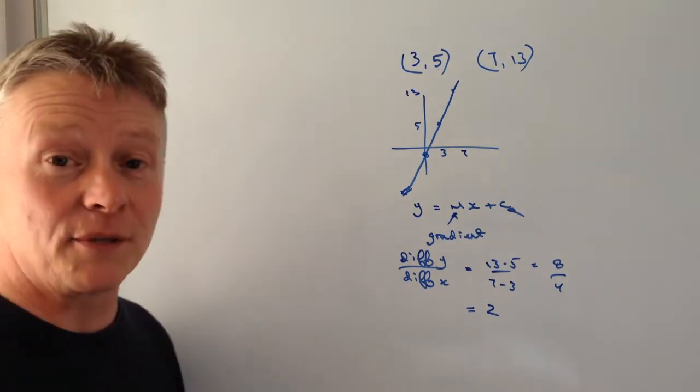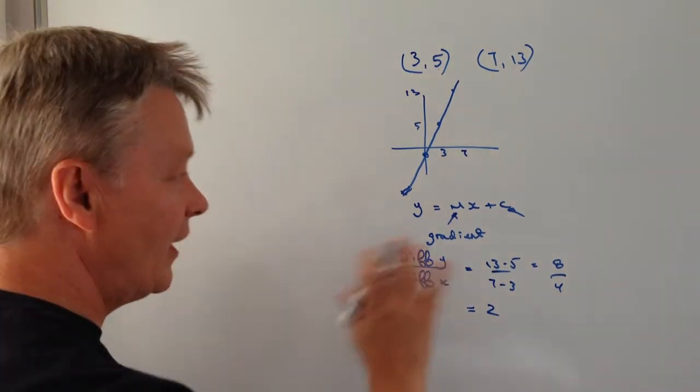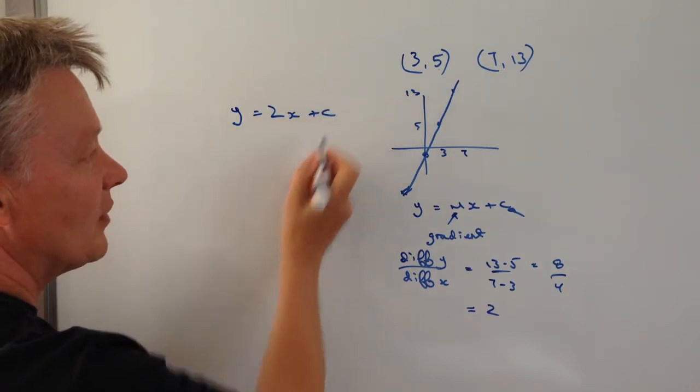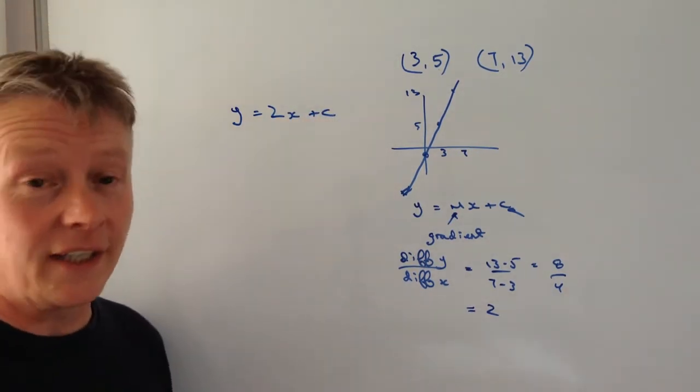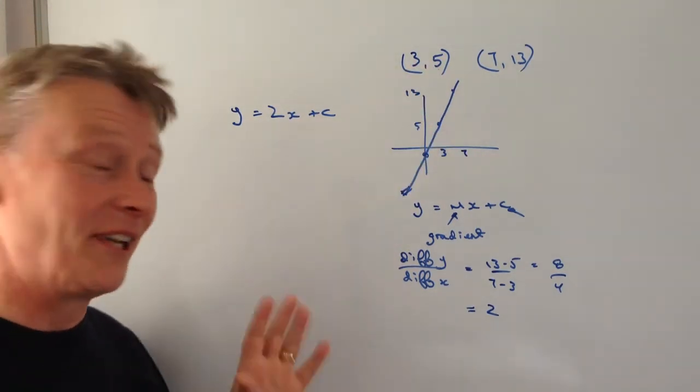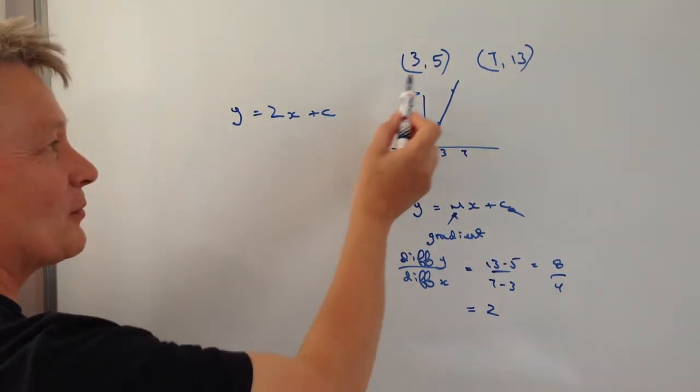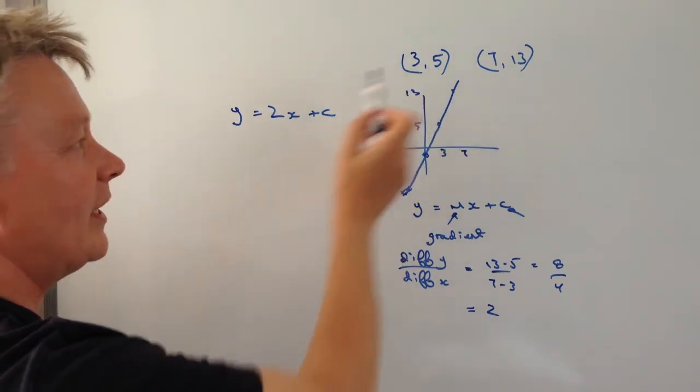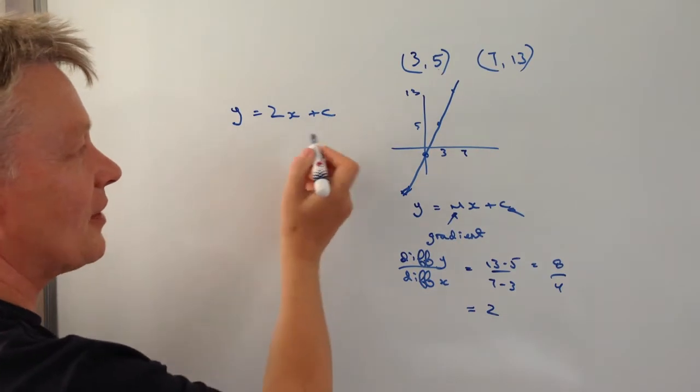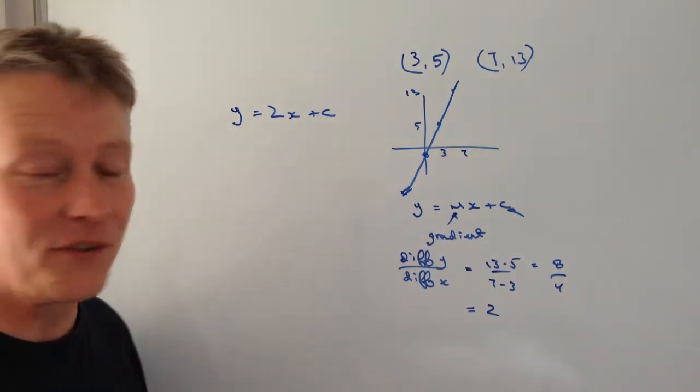So I'm a step closer now to being able to write the equation for this line as y equals 2x plus c. And then it's just really a case of taking whichever set of coordinates you like, I'm just going to take the simpler one, the easier one, because what they're saying here is that when y is equal to 5, x is equal to 3. So we can use that information to find out the value of c.